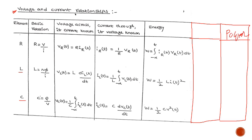For the resistor, the basic relationship is V/I. This is derived from Ohm's law, where voltage V is directly proportional to current I. The voltage across the resistor is V = IR, which we already know. If you want the current, rearranging gives I = V/R.